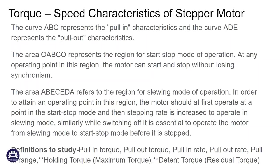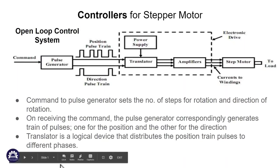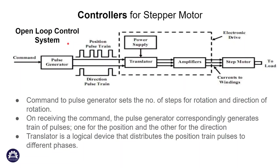We will learn about stepper motor types and torque-speed characteristics, and controllers for the stepper motor. There are two types of controllers: open loop control system and closed loop control system. In the open loop control system, there is a command that is used in a pulse generator.